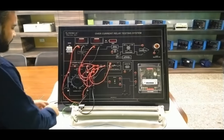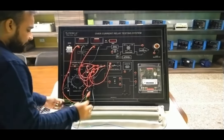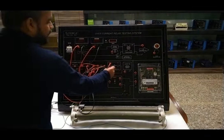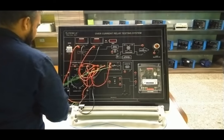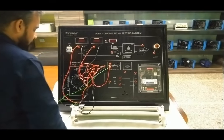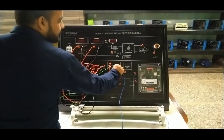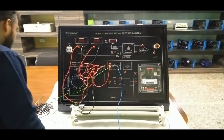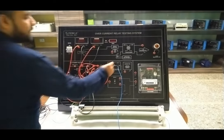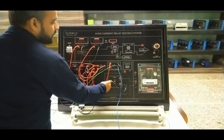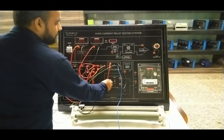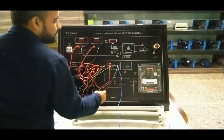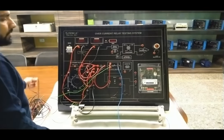Now we will add the rheostat in the system. Connect the rheostat at one point here and the other point at the second terminal of the rheostat. Now using a black patch cord, connect the other end of the rheostat to the relay switch S1, so that current will directly start passing through the IDMT coil.